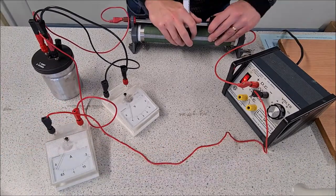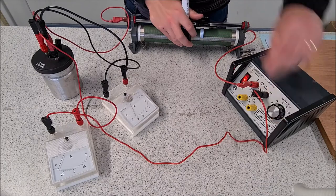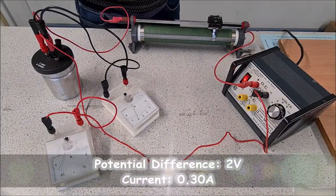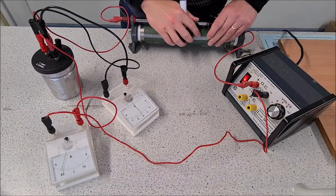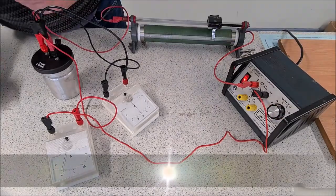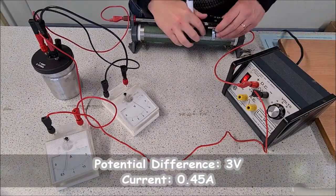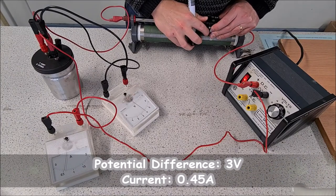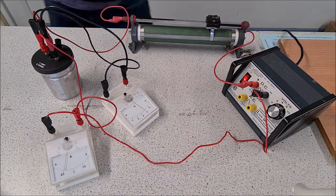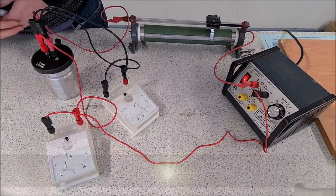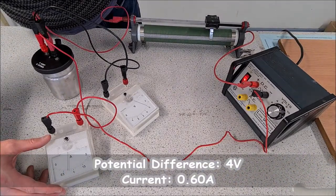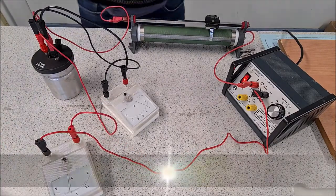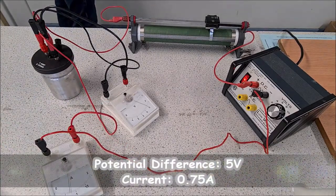We're going to adjust then to get a voltage of 2, our current is 0.3, adjust then for a potential difference of 3, current is 0.45, potential difference of 4, 0.6, potential difference of 5, and the current is, no surprises, 0.75.